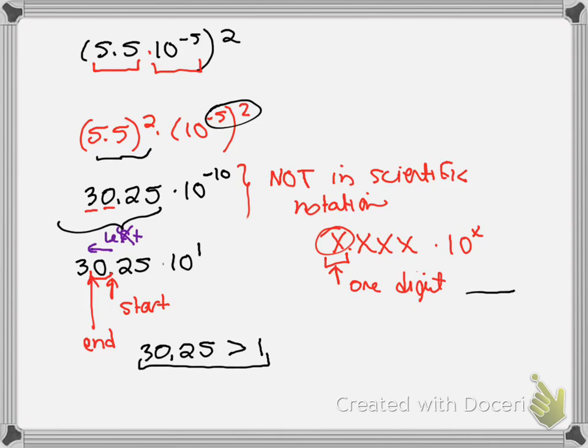Now, at this point, you might have forgotten what we were even doing. So, let me write it out for you. We had 30.25 times 10 to the negative 10th power. And then we changed that to 3.025 times 10 to the first power. So, we just changed this first bit.